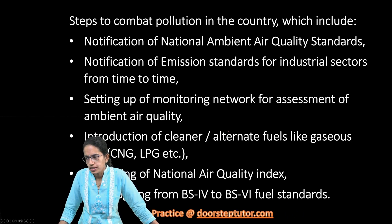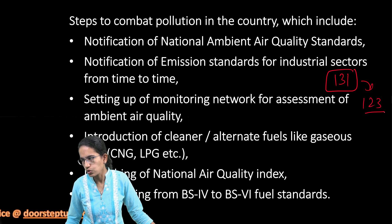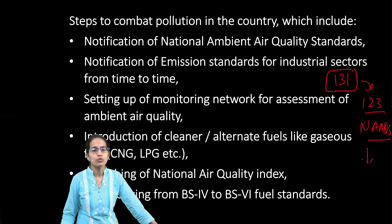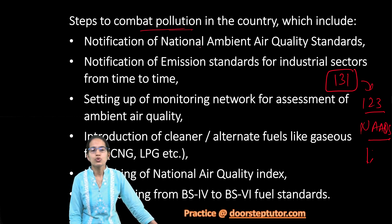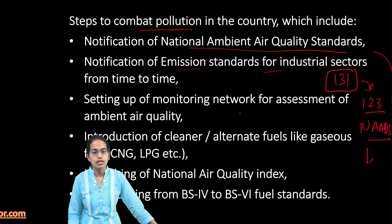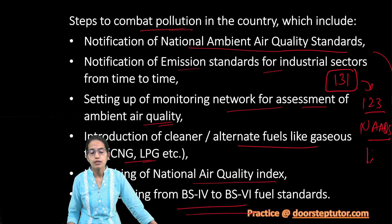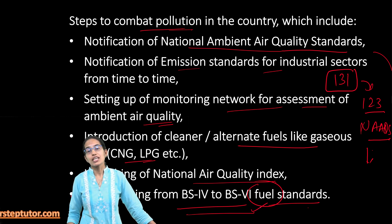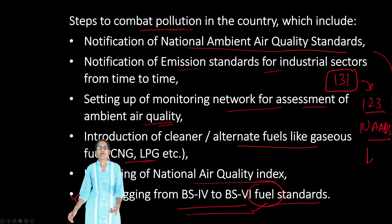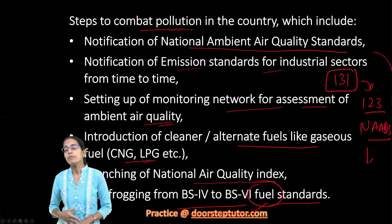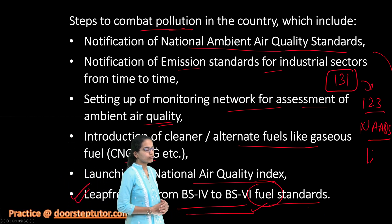The Central Pollution Control Board has identified 131 cities including 123 non-attainment cities under the National Ambient Air Quality Standards. Cities like Kanpur face huge pollution. Steps to combat pollution include emission standards for the industrial sector, monitoring networks for air quality assessment, cleaner fuels like CNG and LPG, the National Air Quality Index, and shifting from BS4 to BS6 fuel standards. Additional notifications cover solid waste management, e-waste management, plastic waste, bio-waste, construction and demolition waste management, and ash generation from coal and lignite-based thermal power projects.